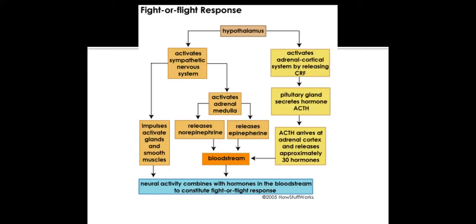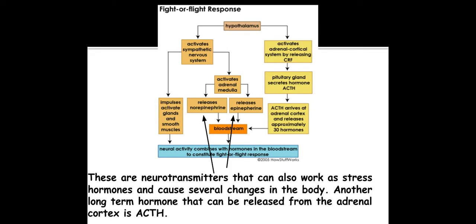The nerves involved here are in the sympathetic nervous system, and the sympathetic nervous system can trigger the adrenal medulla to release norepinephrine and also epinephrine, which are neurotransmitters but can act as hormones. They're released into the bloodstream whereby they impact upon different parts of the body to trigger that fight or flight response. Another hormone that's released is ACTH from the adrenal cortex.